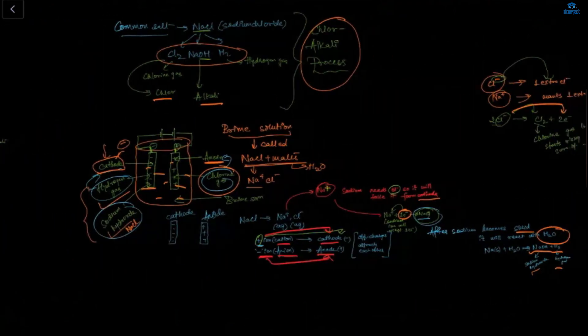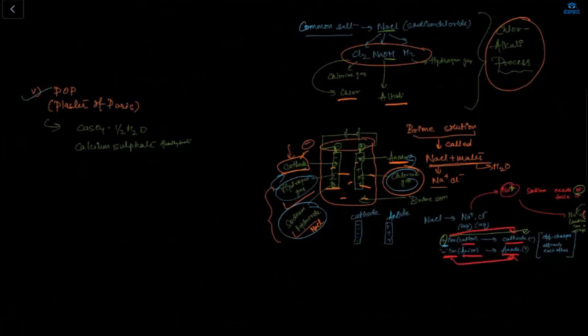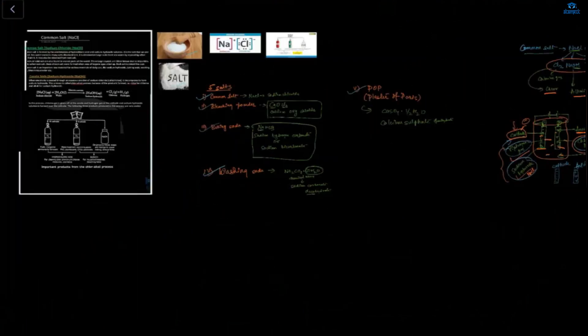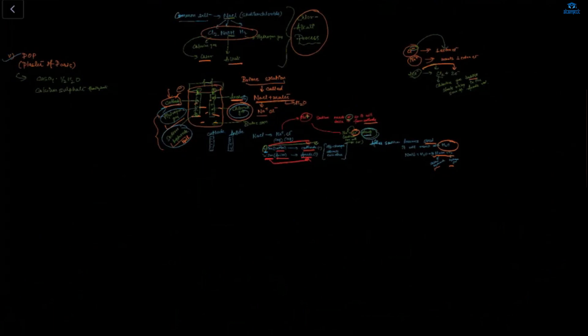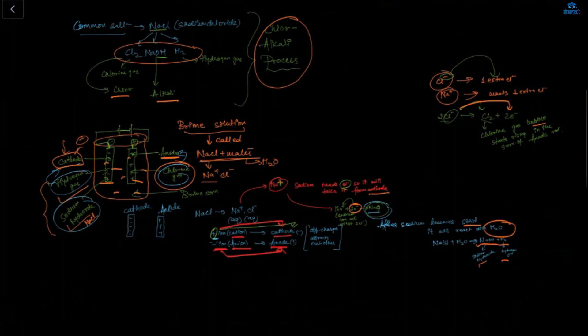Thank you everyone. Please go through this diagram and the written explanation of why hydrogen gas and sodium hydroxide form at the cathode, and why chlorine gas forms at the anode. Bye-bye.